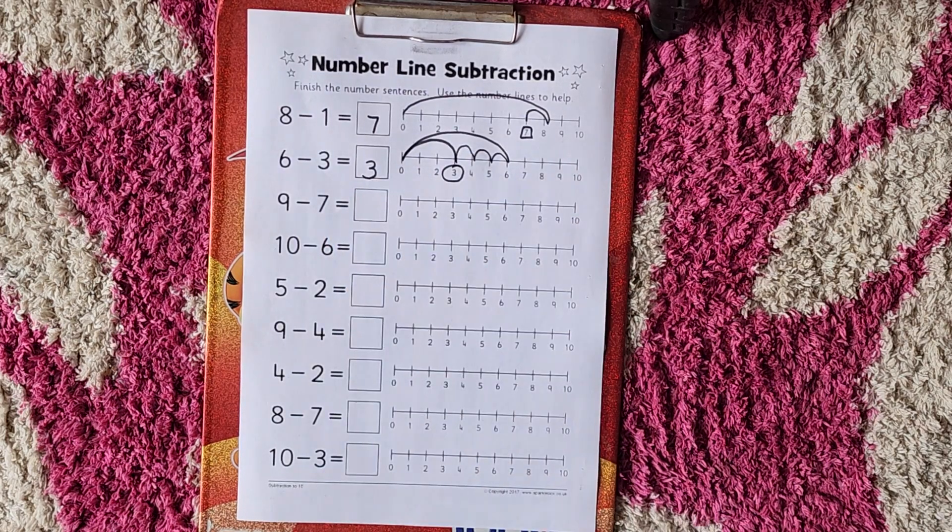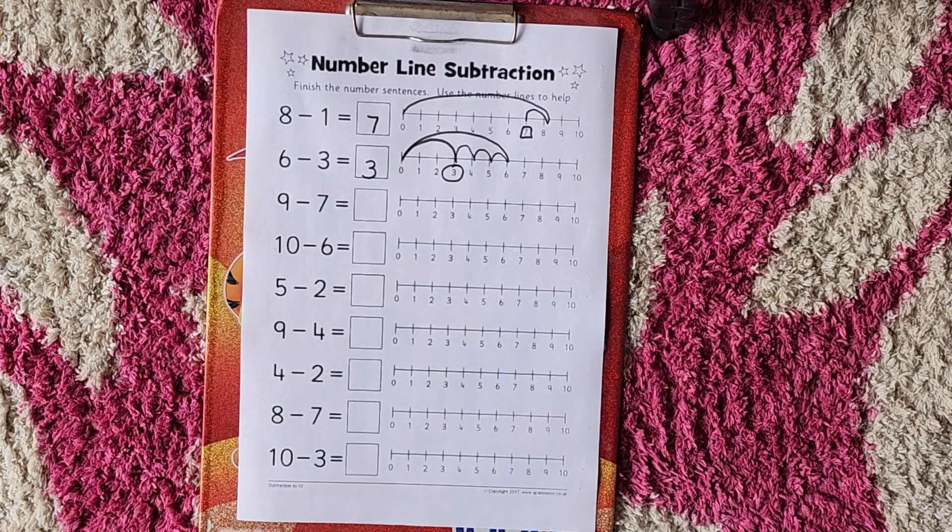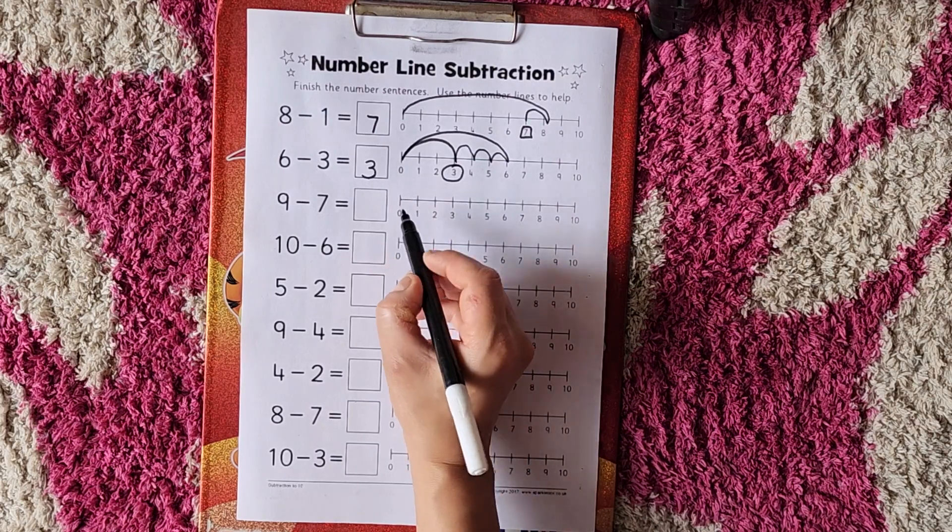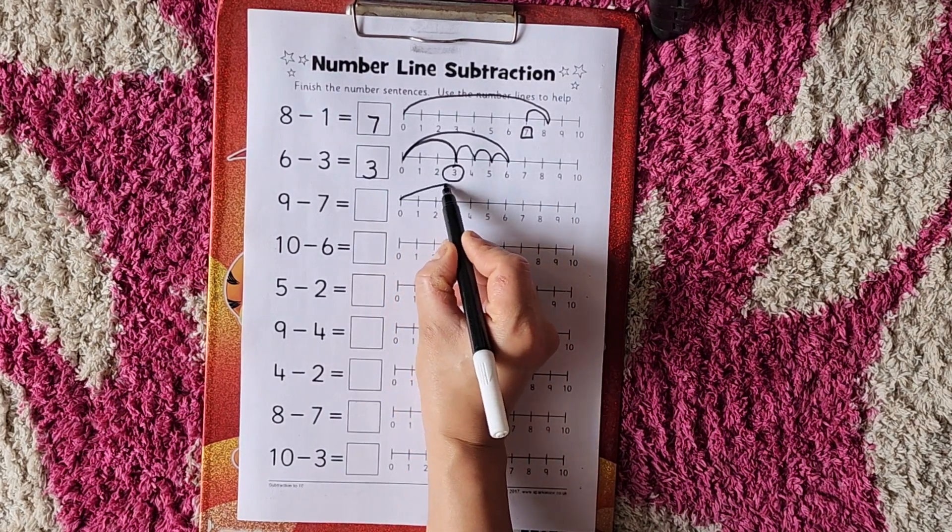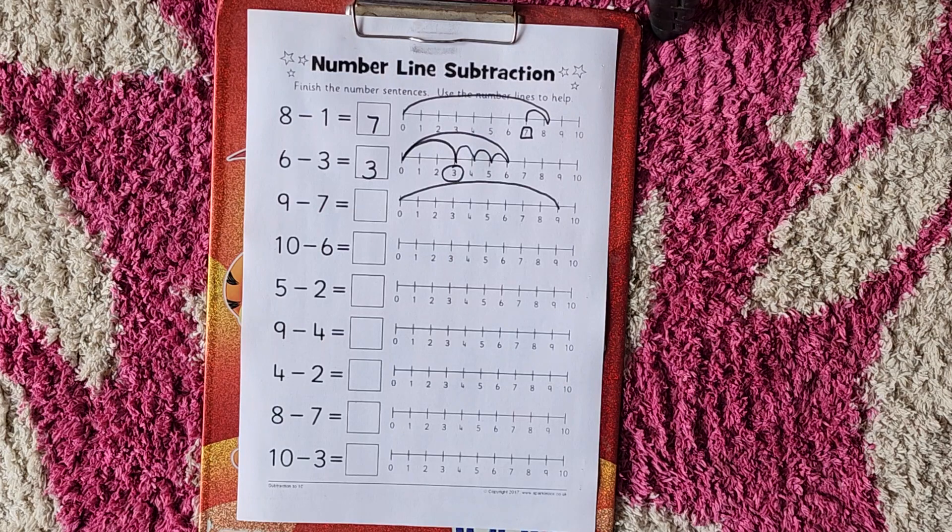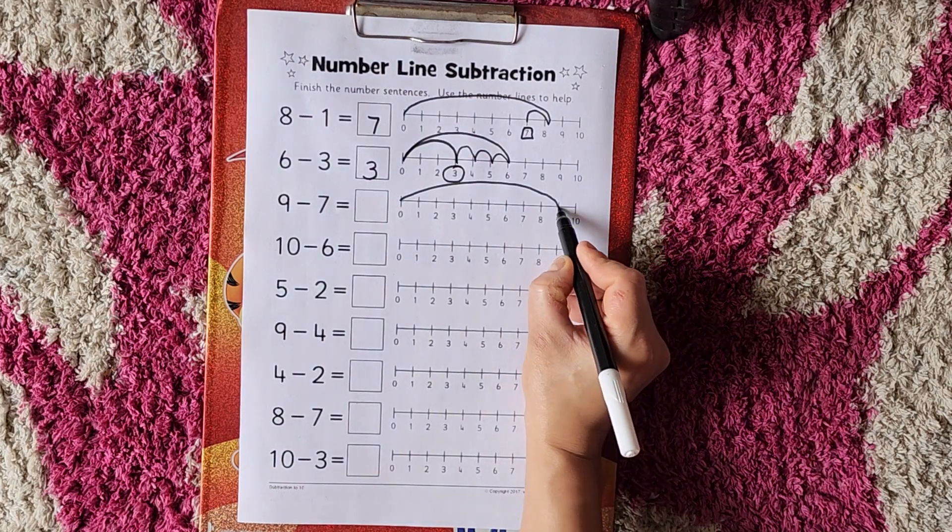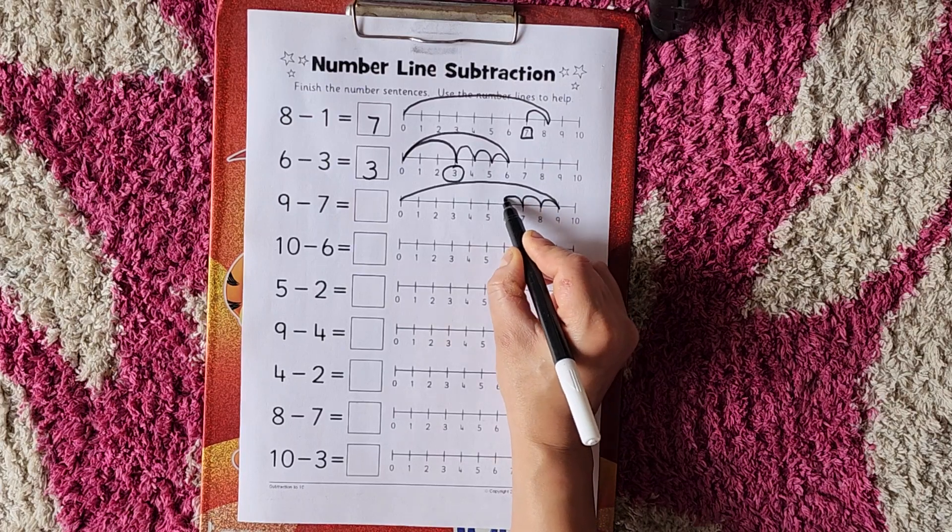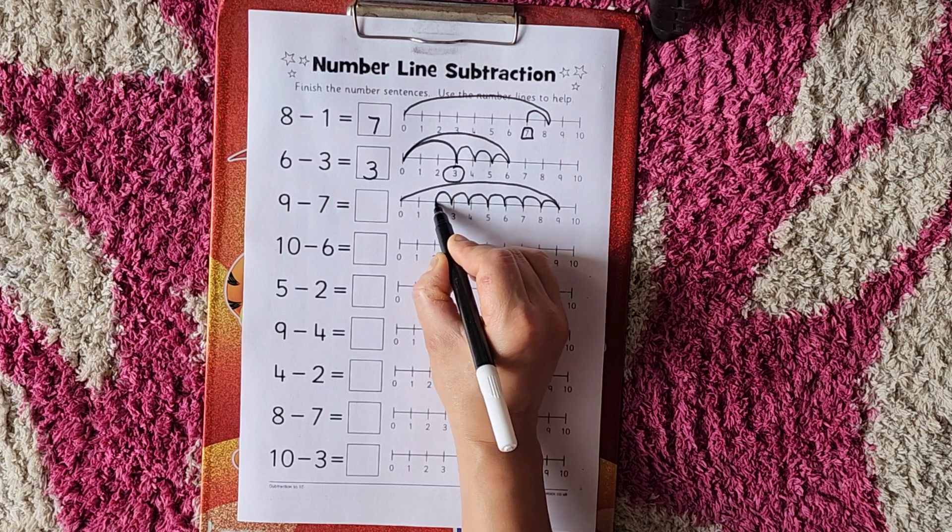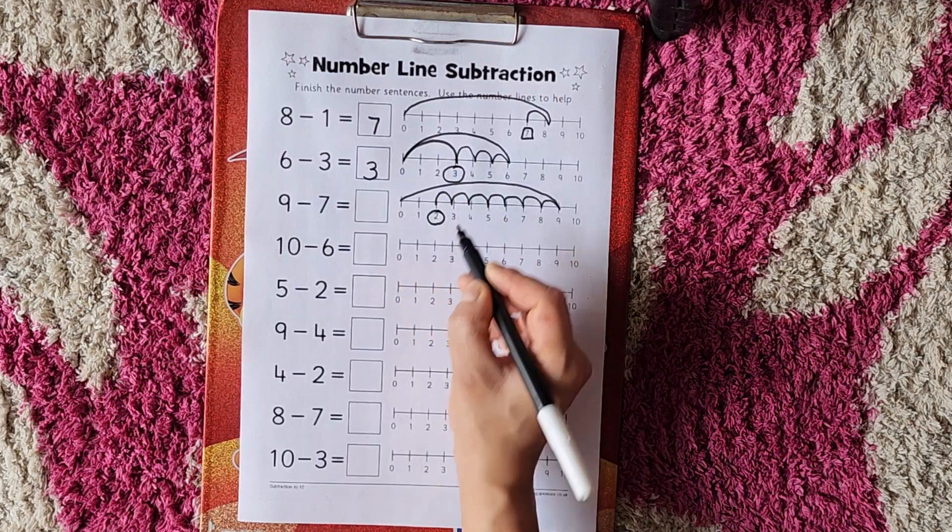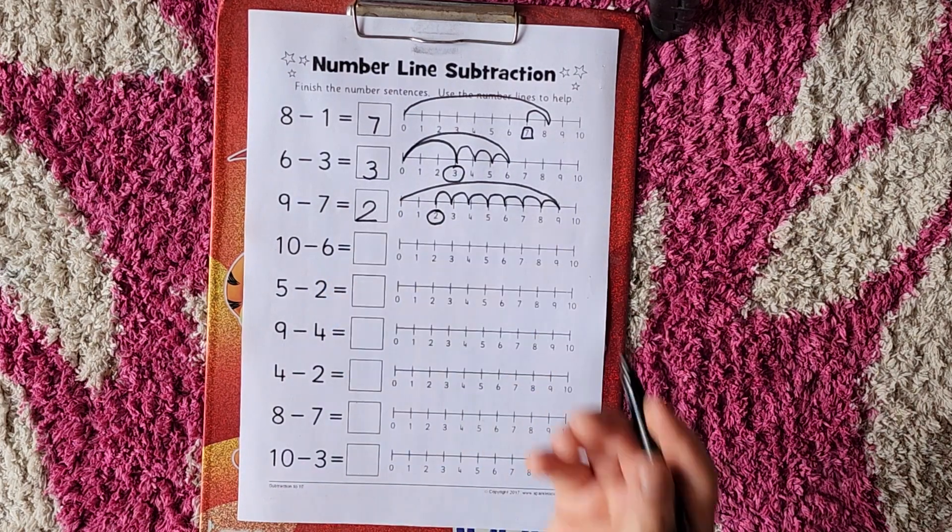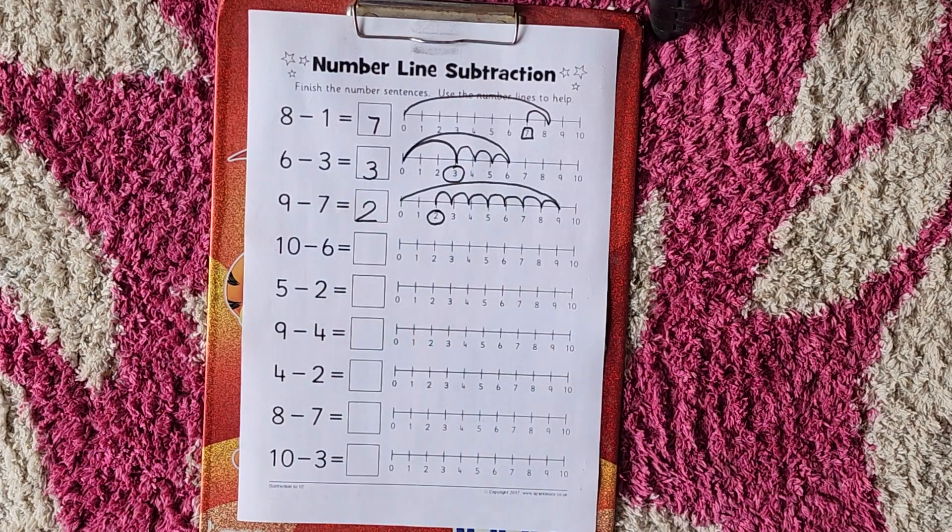Now you will tell me. Now it's your turn. 9 minus 7. Put the pencil on 0, go to 9 number. Here is 9. Now 9 minus 7 means 7 steps back, right? 1, 2, 3, 4, 5, 6, 7. Where we go? 2. So 9 minus 7 is equal to 2.